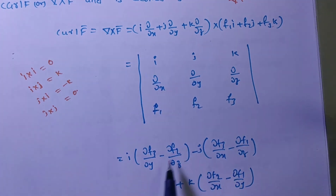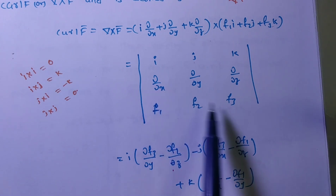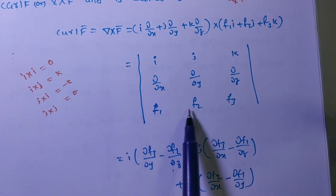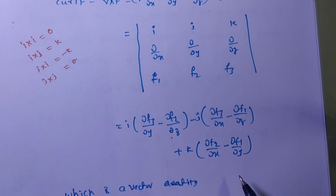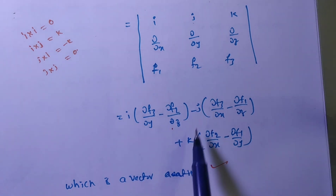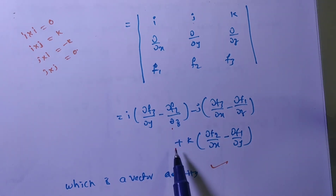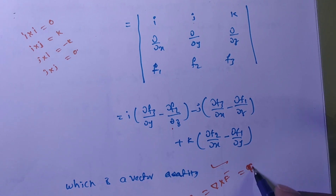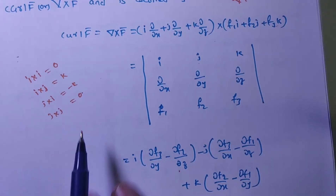Expanding the determinant: curl f̄ = i(∂f₃/∂y − ∂f₂/∂z) − j(∂f₃/∂x − ∂f₁/∂z) + k(∂f₂/∂x − ∂f₁/∂y). The result has i, j, k components, so curl f̄ is again a vector. We can treat it as a vector ḡ. The cross product of two vectors gives a vector.